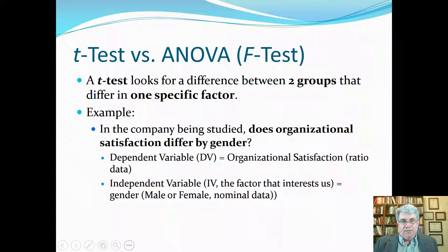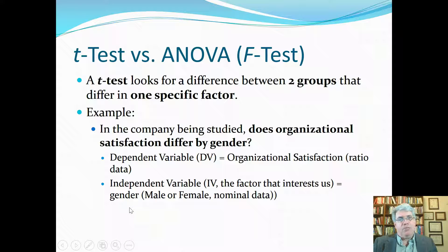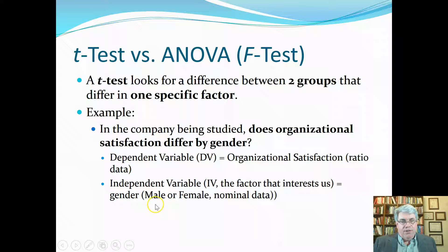The dependent variable is organizational satisfaction — that's ratio data, it can take on any value within whatever the scale is. The independent variable is the factor that interests us, and the factor here is gender. Factor is a really important word in ANOVA — it's something that acts as an independent variable and describes categories we're interested in. The independent variable gender can take on two values, male or female, so this would be nominal data. That's a t-test: two groups and one specific factor.